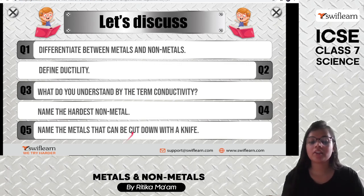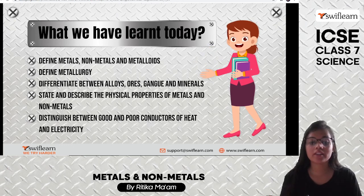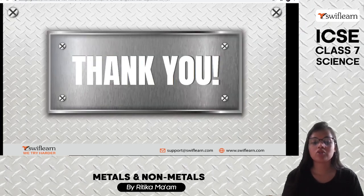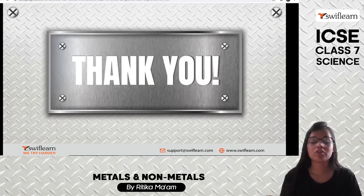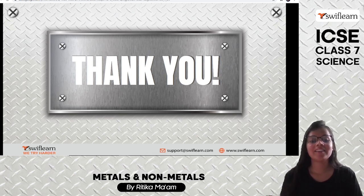Today we learned about metals, nonmetals, and metalloids; what is meant by metallurgy; the difference between alloy, ore, gang, and minerals; and some of the physical properties of metals and nonmetals. I hope you understood everything we covered. We will take this chapter further in the next session where we will study many more things. Also, book your free trial class on Swift Learn. Thank you very much!